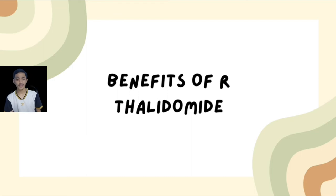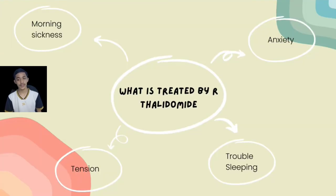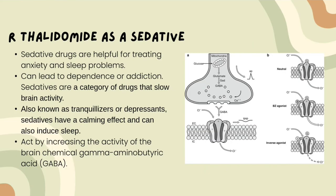There are several benefits of R-thalidomide. One of the most notable benefits is that it treats morning sickness, anxiety, tension, and trouble sleeping. R-thalidomide can also act as a sedative. Sedative drugs are helpful for treating anxiety and sleep problems; however, they can lead to dependence or addiction. Sedatives are a category of drugs that slow brain activity, also known as tranquilizers or depressants. They have a calming effect and can induce sleep by increasing the activity of the brain chemical gamma-aminobutyric acid (GABA).